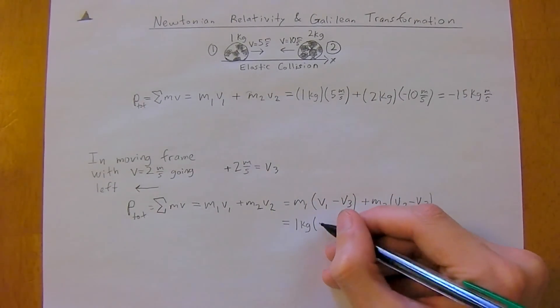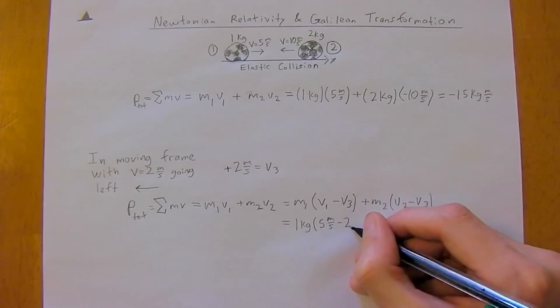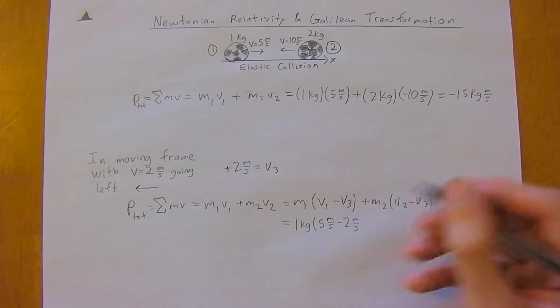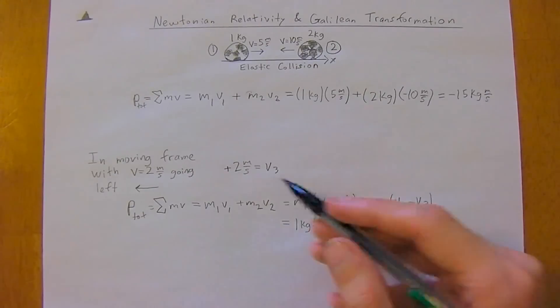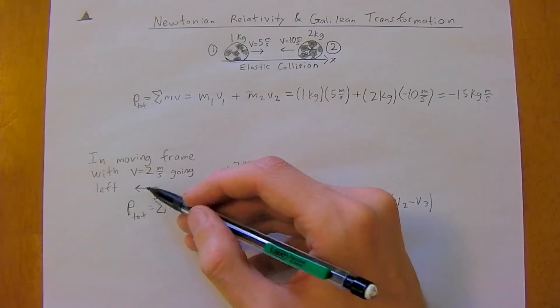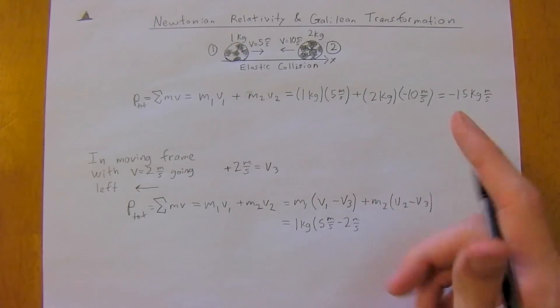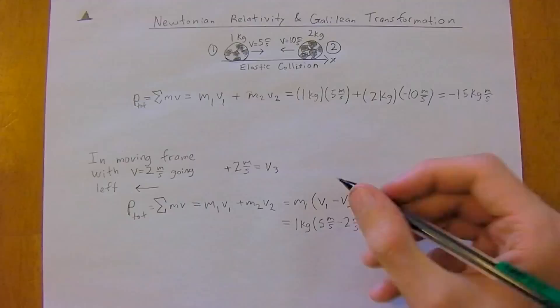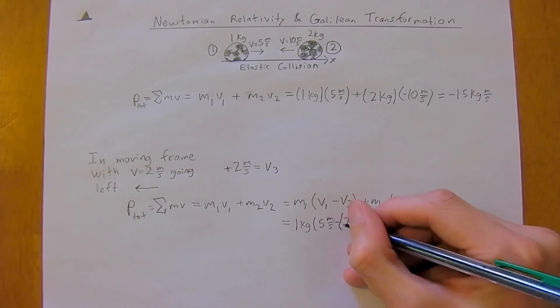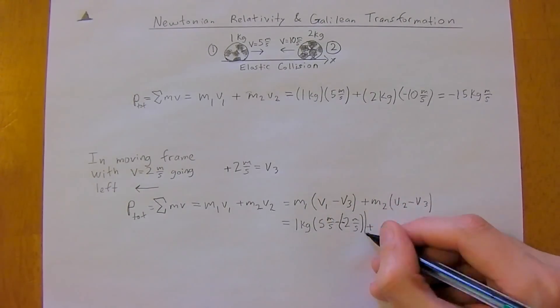So this is equal to 1 kilogram times 5 meters per second, minus 2 meters per second. And this is the important part. We need to recall that moving left on the x-axis is negative. So it's actually going to be a negative of a negative, which will make it positive in the end.